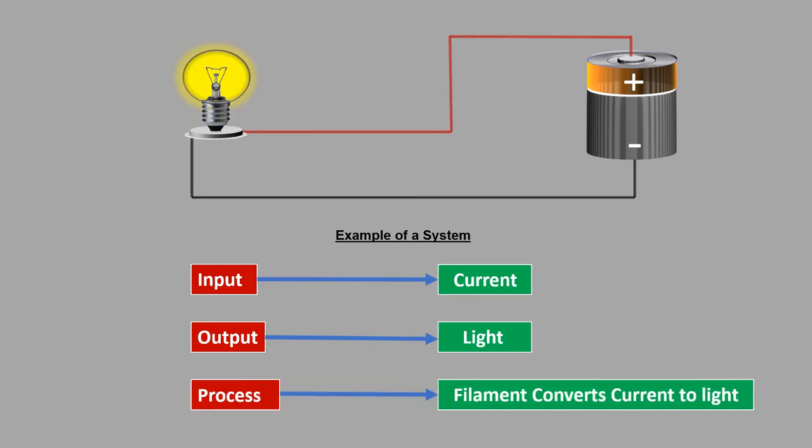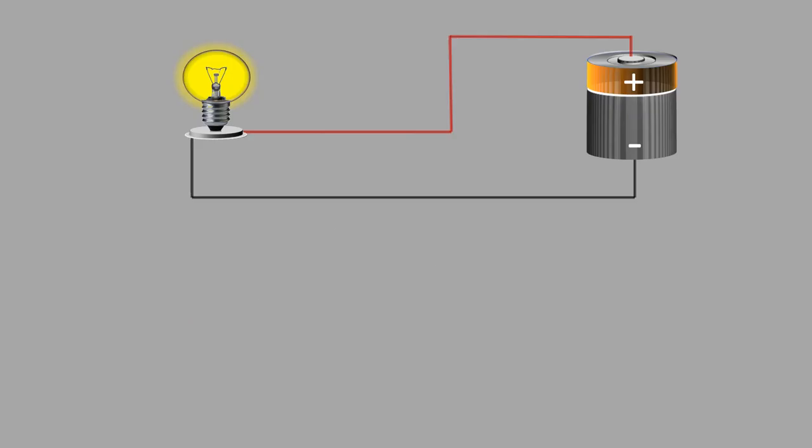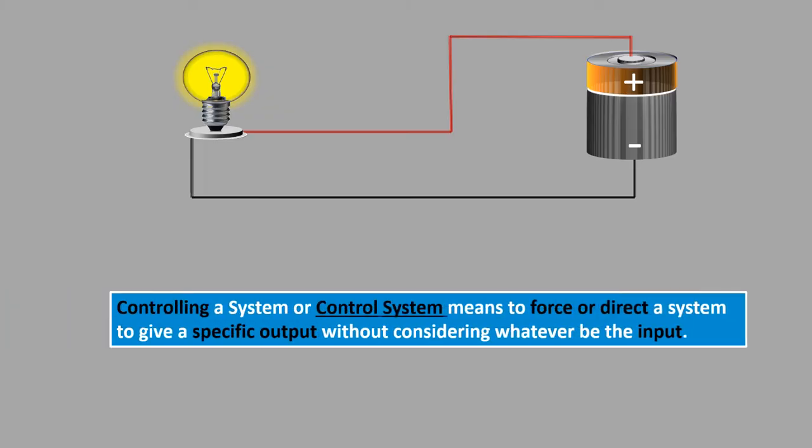Now consider that we need to control the bulb. That is, it should be on when we require light. This means we need to control the output of the system according to our wish. Controlling the system or control system means to force or direct a system to give a specific output without considering whatever be the input.